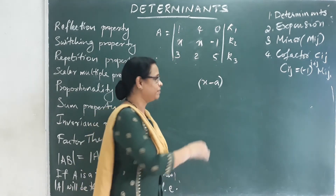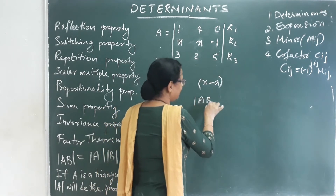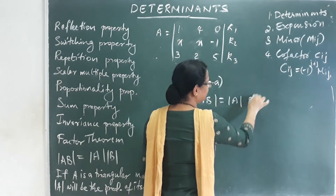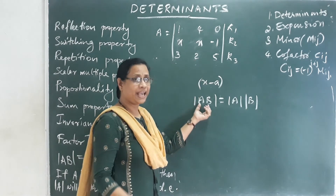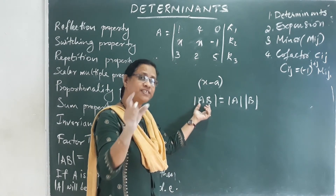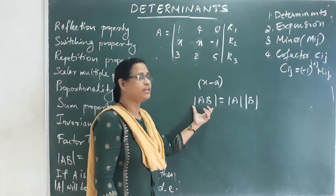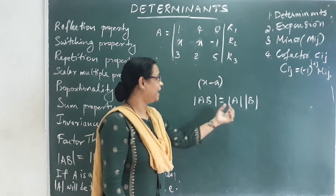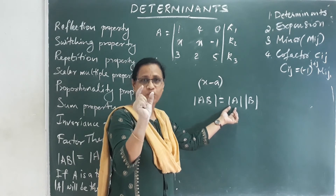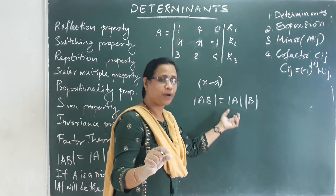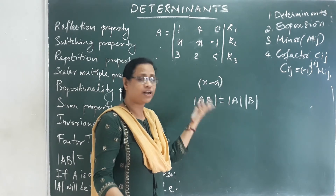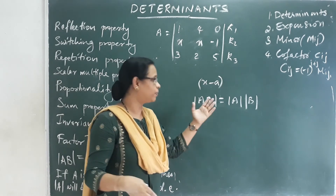The next property states that the determinant of AB equals the determinant of A times the determinant of B, where A and B are matrices. Multiplying two matrices and taking the determinant gives the same result as multiplying their individual determinants.